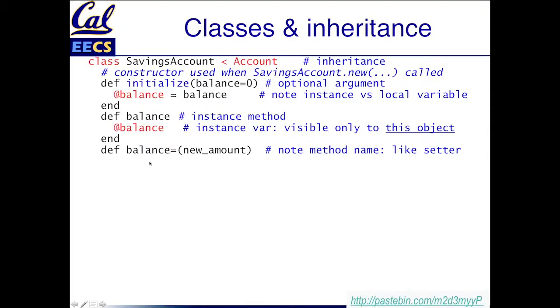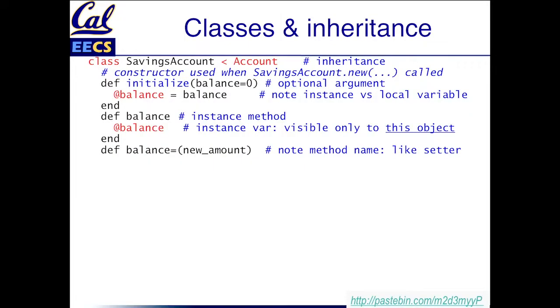I also need a way to set the balance — who knows, maybe I'd like to launder money into my bank account. Here's another function, and yes, balance= is the name of a method. Remember I said everything is a method call? This is where we're starting to get serious. balance= is a different method from balance. There's a special case in Ruby for methods that end in the equal sign, and that's how you can define your own setters. So balance= will take a new amount and set the instance variable to that. Of course real bank accounts are not quite this easy to add money to yourself, so we'll get more realistic in a moment.